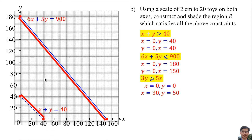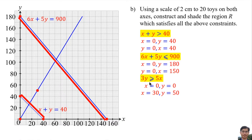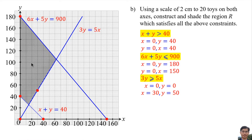For the third line, plot x equals 0 with y equals 0, and x equals 30 with y equals 50. Connect both points with a solid line. More than or equal means above the solid line. So the shaded region is here — label it as R.